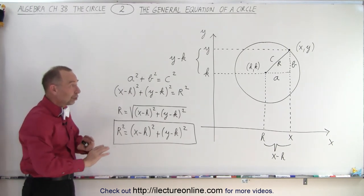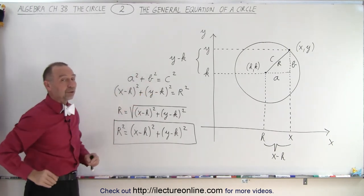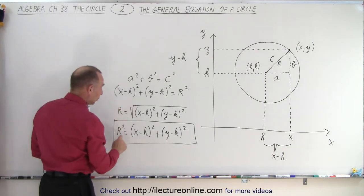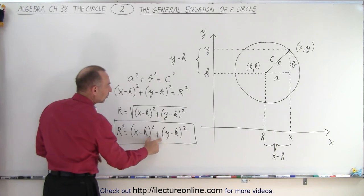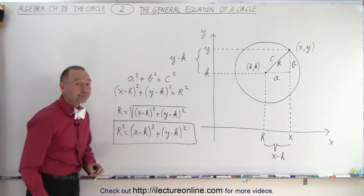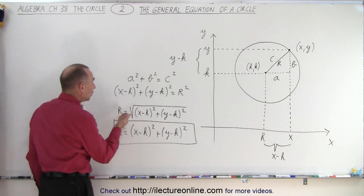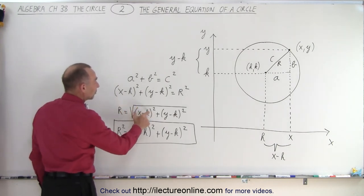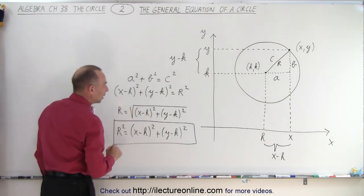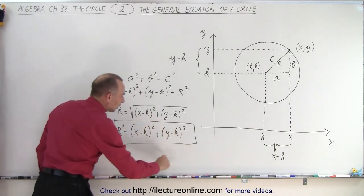The general equation of a circle, no matter where you put the circle in the x, y plane. So if we turn that equation around, we have r squared equals the quantity x minus h squared plus the quantity y minus k squared. And of course, if you take the square root of both sides, you end up at r equals the square root of x minus h squared plus y minus k squared. But the real equation is the one that we boxed in.